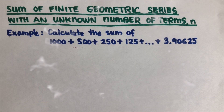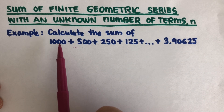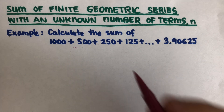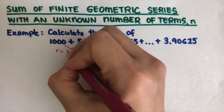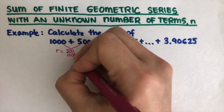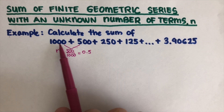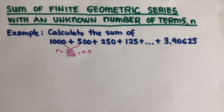Hello everyone, today we will be calculating the sum of a geometric series with an unknown number of terms. In this problem, to calculate the sum we need the first term a₁, the multiplier r, and the number of terms n. To find r, we divide two consecutive terms: r = 500 ÷ 1000 = 0.5. If you want to know how the formula for the sum of a finite geometric series is derived, there is another video for that — I will put the link in the description box below.